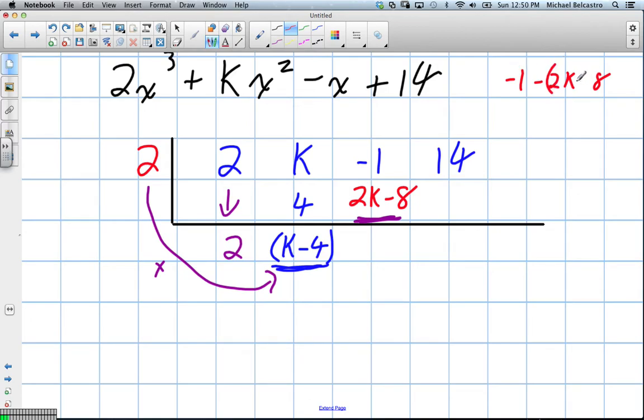It should be minus 2k minus 8. But we distribute that negative, so we get negative 1 minus 2k plus 8. So we end up with negative 2k plus 7. That's our value down here.